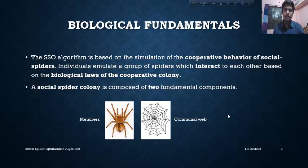So let's start with some critical terms. Our Social Spider Optimization Algorithm is based on the simulation of cooperative behaviour of social spiders. We will discuss about how they interact in the biological laws of cooperative web. A social spider colony is totally composed of two fundamental components: one is member and the other is communal web.